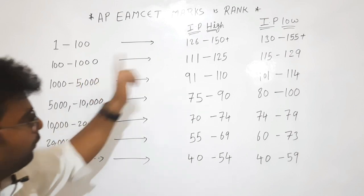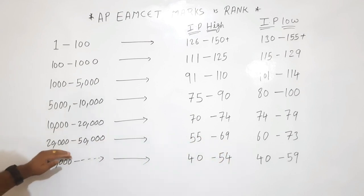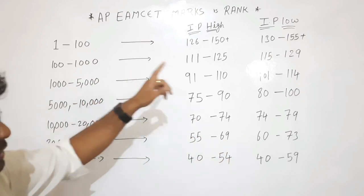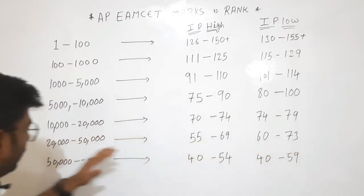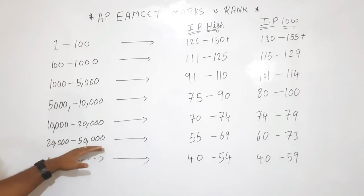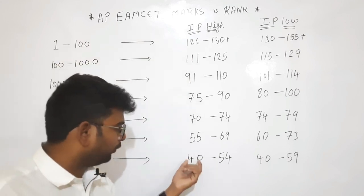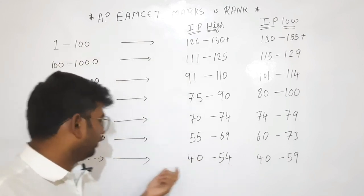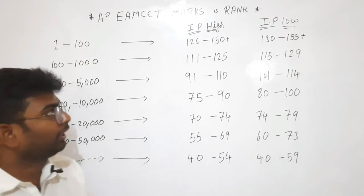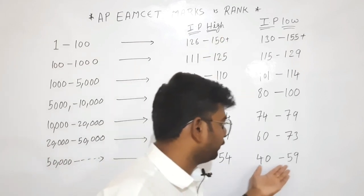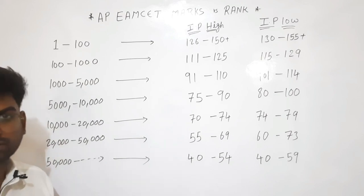If you have a rank in IP with 55 to 60 marks, or 60 to 73 marks in IP, you have a rank between 20,000 and 50,000. For the last range, you have 75 to 74,000. In M-set, you have 40 to 54 marks. You have a 50,000 to 1,00,000 rank.